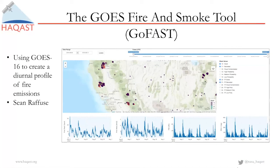In the past we've really been reliant on MODIS and also VIIRS, which are very good but only provide instantaneous snapshots of the fire — perhaps in the morning or afternoon — and from those we have to infer some sort of diurnal profile of how the fire is progressing.